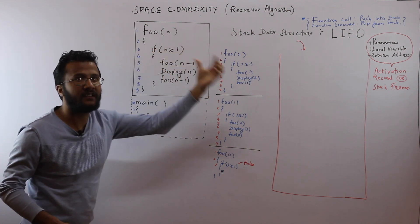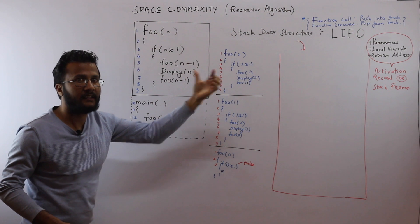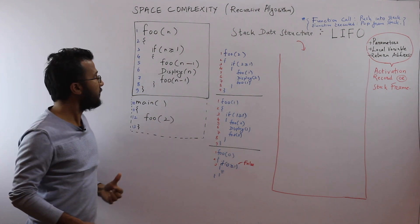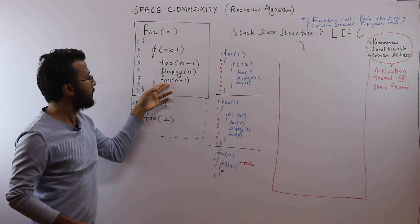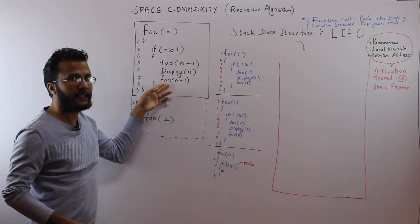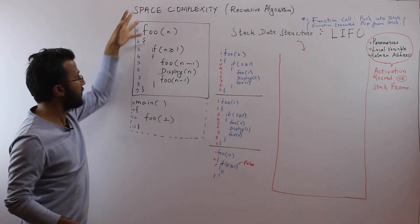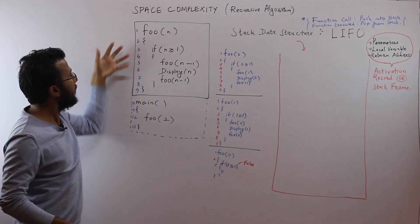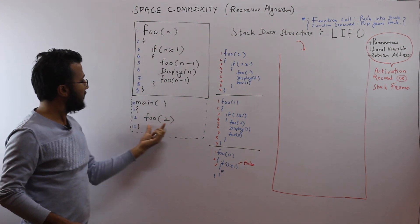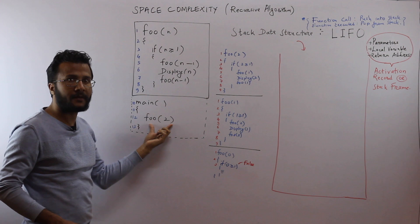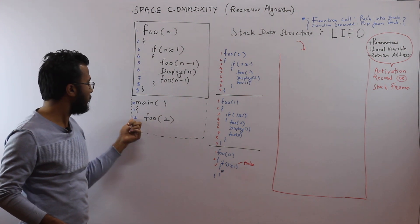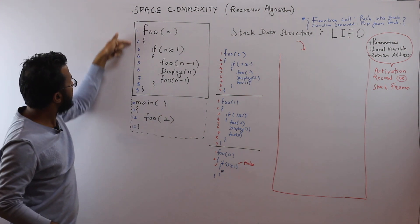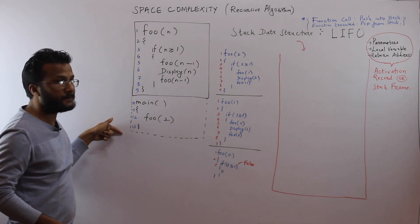The display function prints the value of n in the terminal, and foo is called again at the end — so this is a recursive function. This is the main function, where foo is being called for the first time at line number 12.